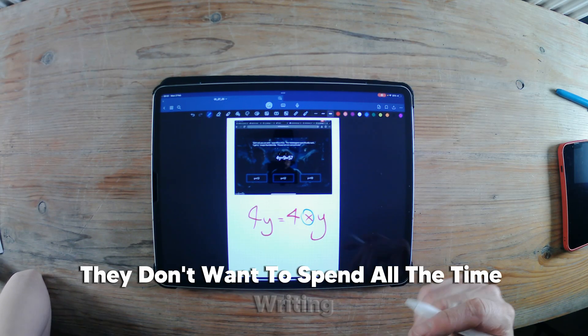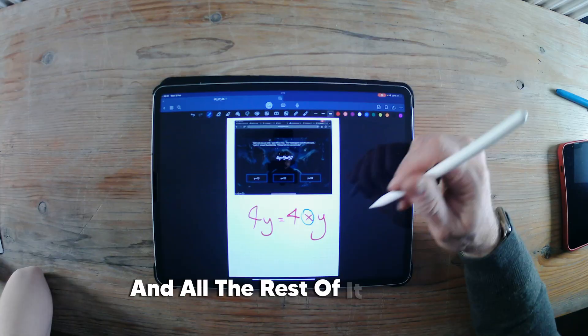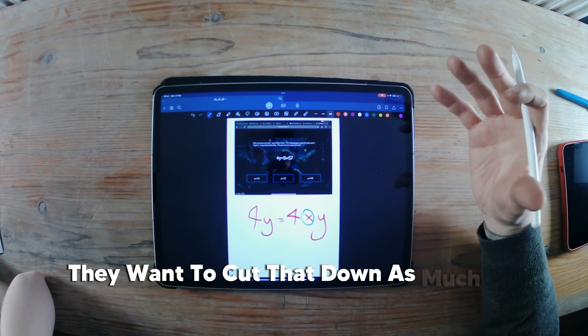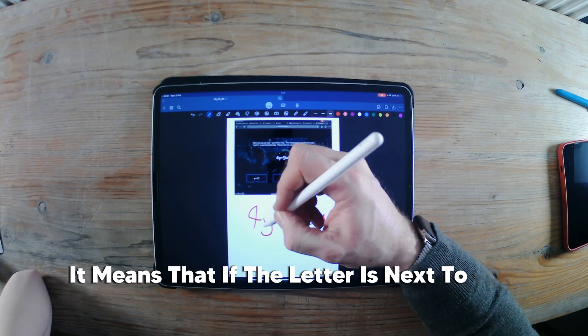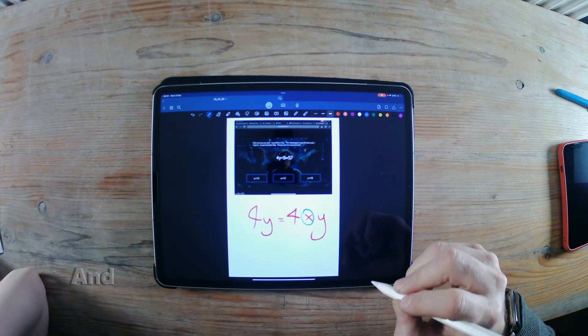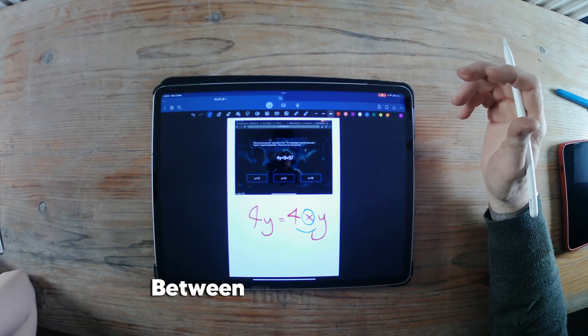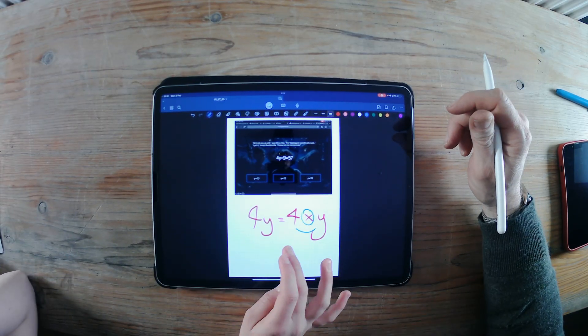They don't want to spend all the time writing plus and minus and times and all the rest of it. At least they want to cut that down as much as possible. So, simply it means that if the letter is next to the number, there is a times sign between them, and that means that there is something going on between those numbers. 4 times y.